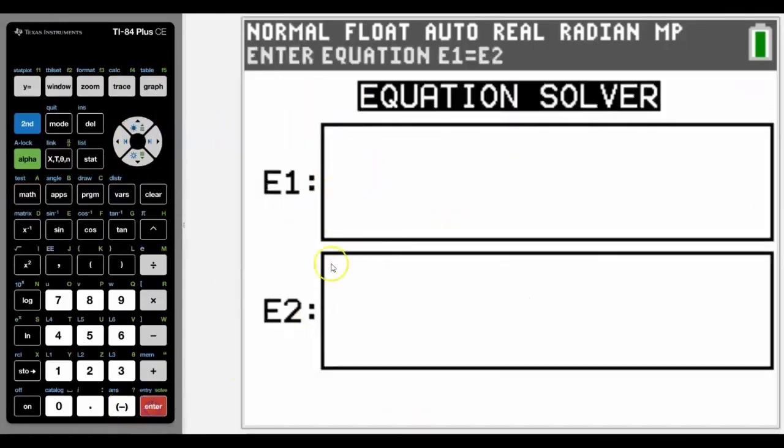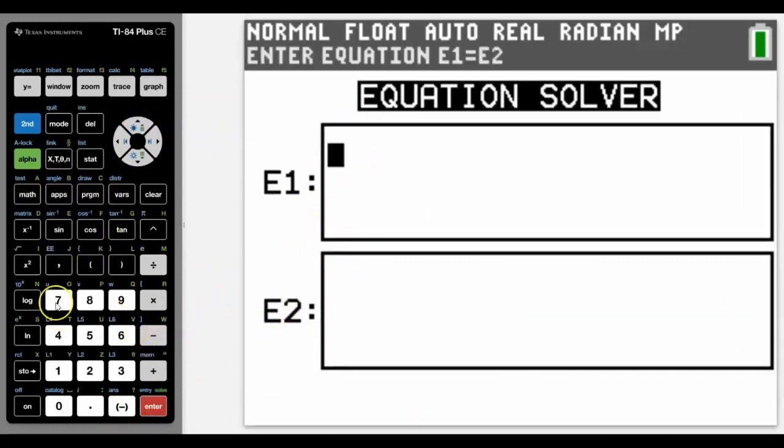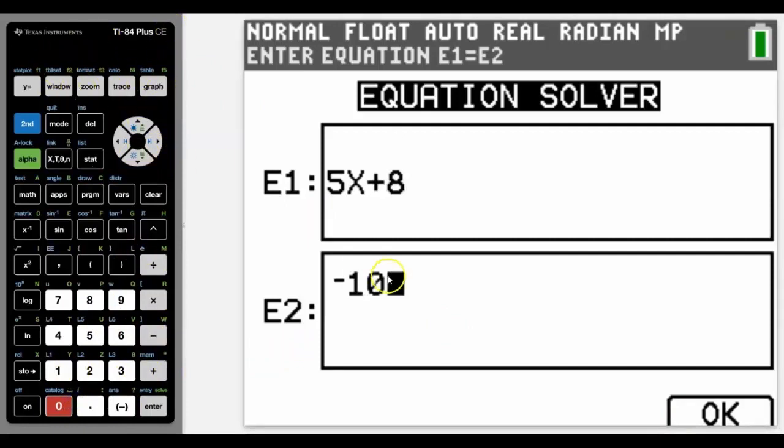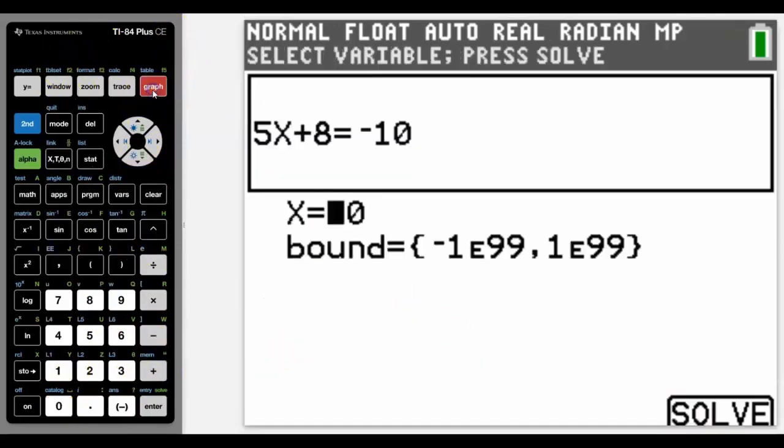And in that case we can either type in two equations or we can type in two sides of that equation. So we got 5x plus 8, come down and negative 10. Now don't forget I've set my calculator up like this. Don't forget this tab here is actually the F5 key on your calculator. I'm using the software.